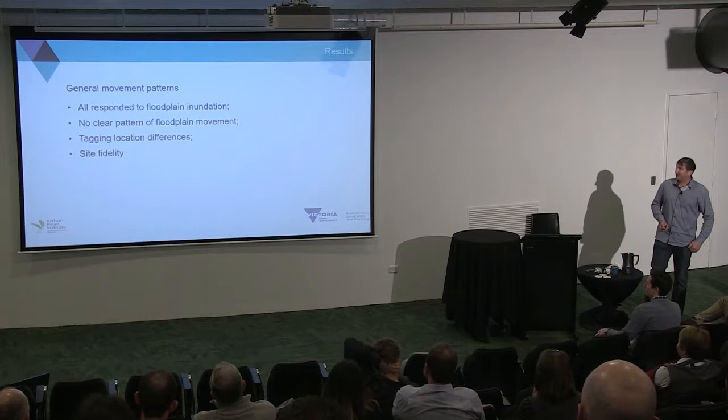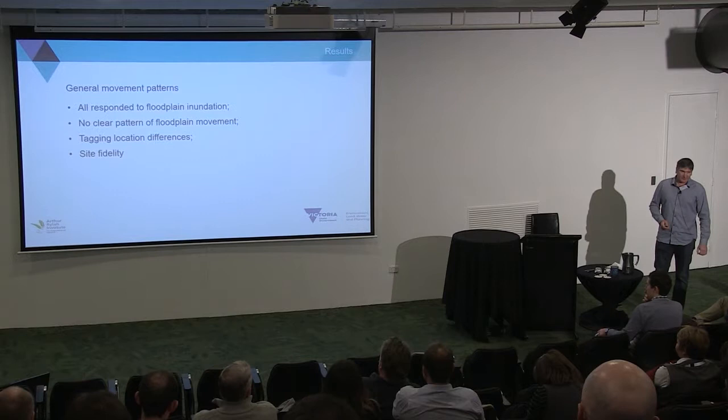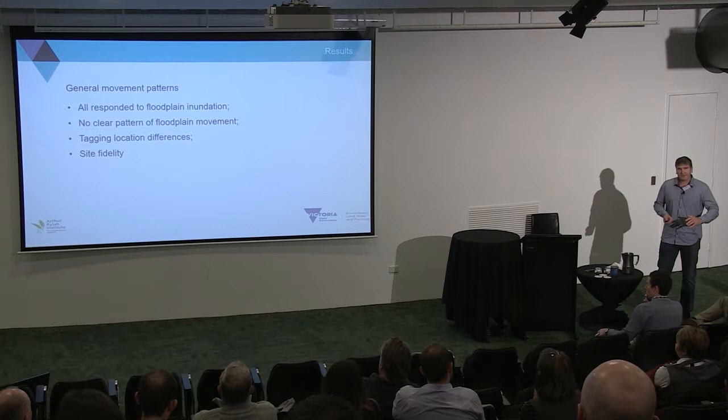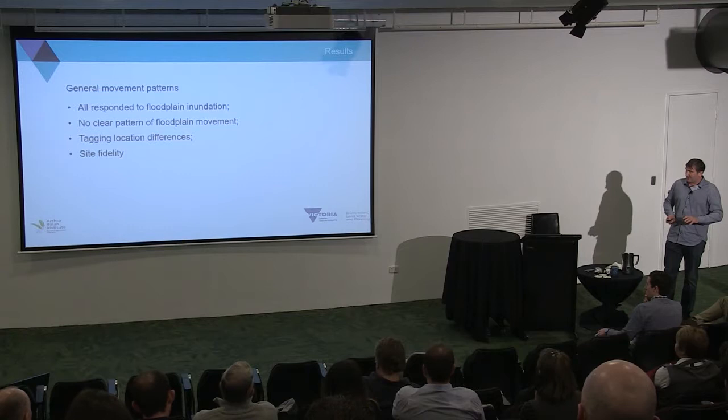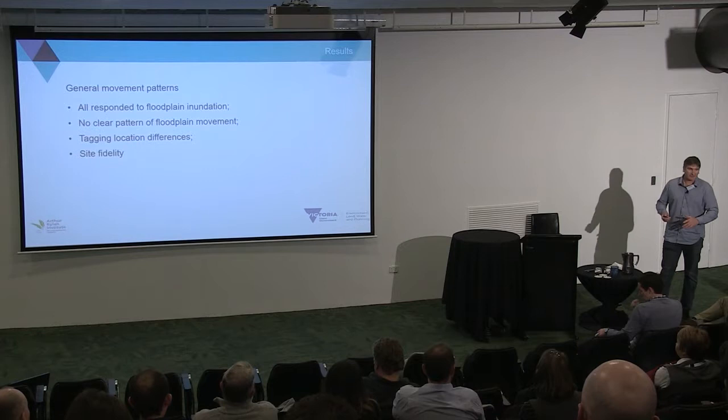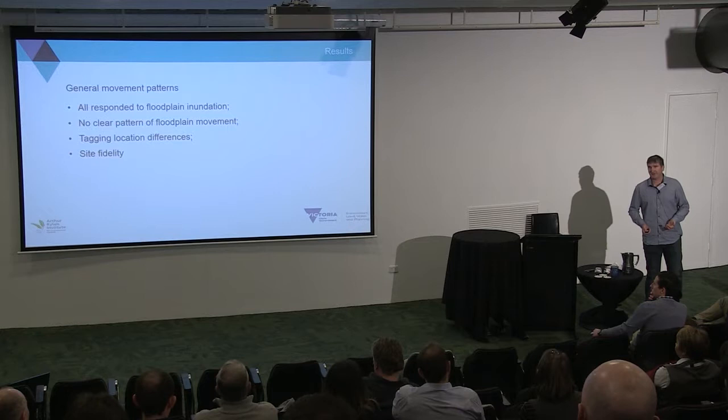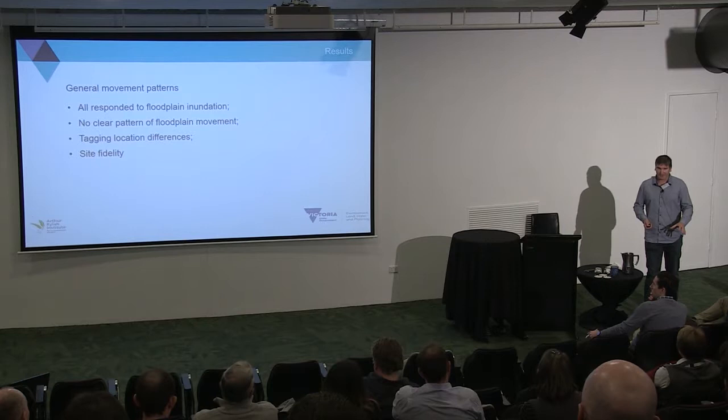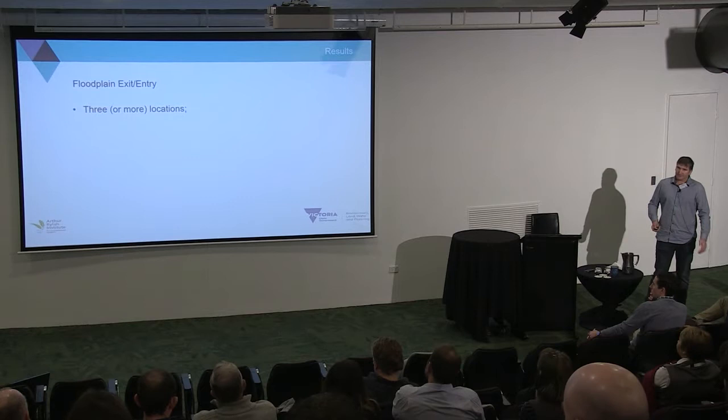In general, they all responded to the floodplain inundation, but there was no clear pattern within the floodplain. We did notice differences based on tagging location — fish tagged right down the bottom at the natural outfall didn't move through the forest as much as those tagged elsewhere. That's important: if you'd only tagged from that area, you'd have gotten a totally different response, which could affect source population size estimates. A number of fish also showed site fidelity, returning to their tagging location after the flood receded — either on the floodplain or back to the Murray River at those exit-entry points.